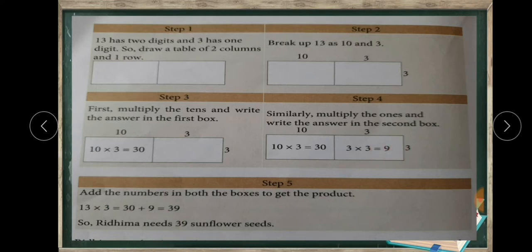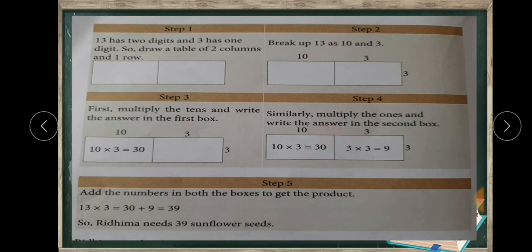The last step is to add the numbers in both boxes to get the product. We got 30 when we multiplied 10 by 3, and the product of 3 and 3 is 9. So we add these two numbers: 30 plus 9 is 39. The product of 13 and 3 is 39.